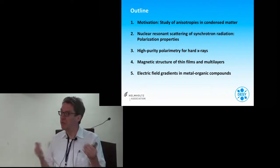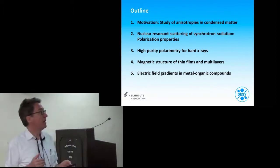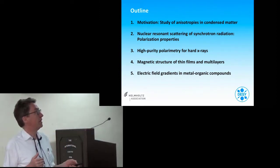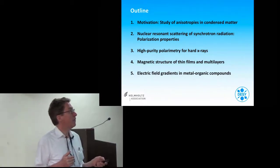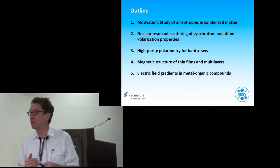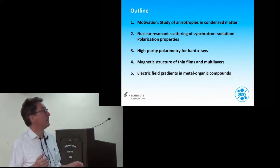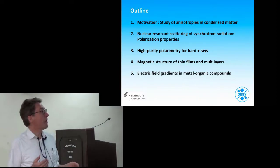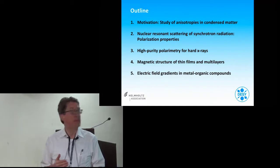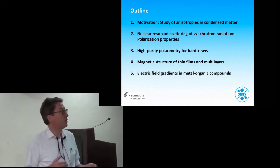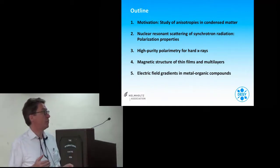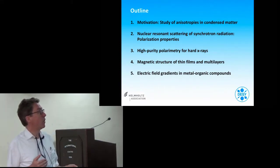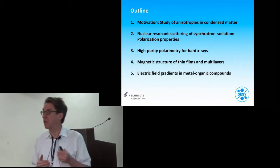For that, we need a very sensitive method, and my suggestion today is high purity polarimetry. I will focus on polarization properties of nuclear resonance scattering, explain the method of high purity polarimetry for hard x-rays, and present two applications: magnetic structure of thin films and multilayers — which I will cover briefly — and electric field gradients in metal-organic compounds, which will be the main focus.